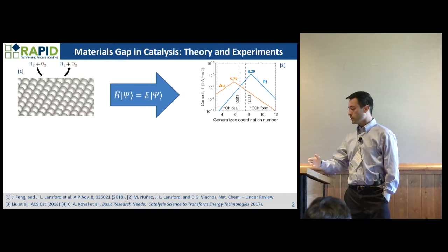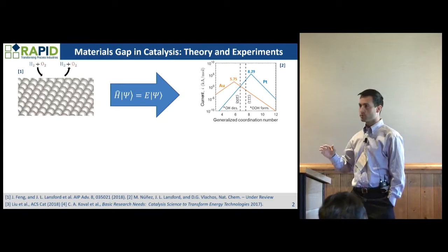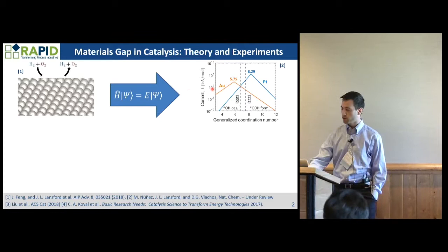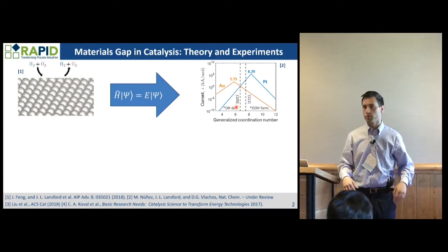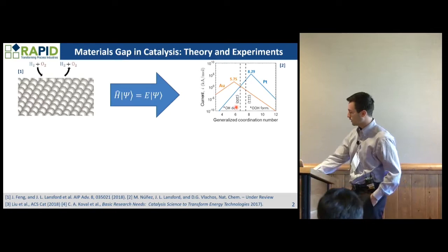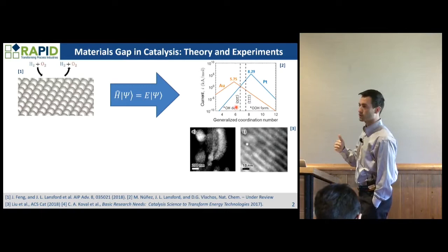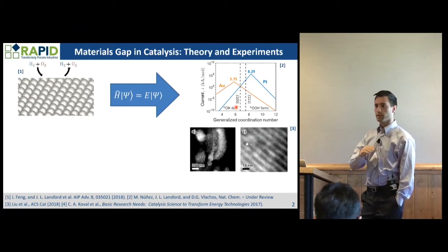We start off with relatively simple surfaces when we're doing first principles quantum calculations. We parameterize these physical models using quantum mechanics. Here you can see that we have current as a functional, as a generalized coordination number, and we can use this to find optimal types of sites and then infer from that optimal types of catalysts for accelerating catalyst design. Right now we can only really do this for simple materials — we only have the experimental techniques and analysis methods for interpreting results from simple materials, and so we are often left with these basic extended facets.